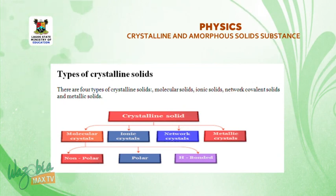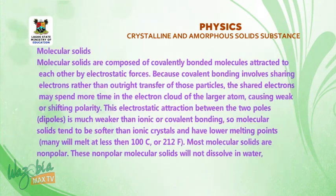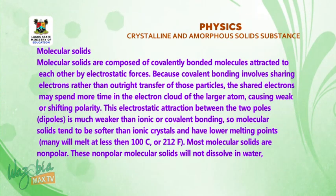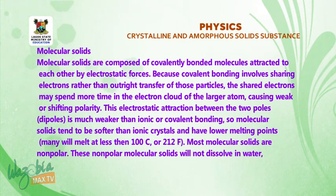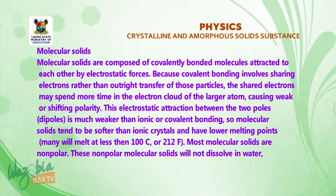There are four types of crystalline solid: molecular solid, ionic solid, network covalent solid, and metallic solid. Molecular solids can be further broken down into non-polar, polar, and hydrogen-bonded. Molecular solids are composed of covalent-bonded molecules attracted to each other by electrostatic force, because covalent bonding involves sharing electrons.